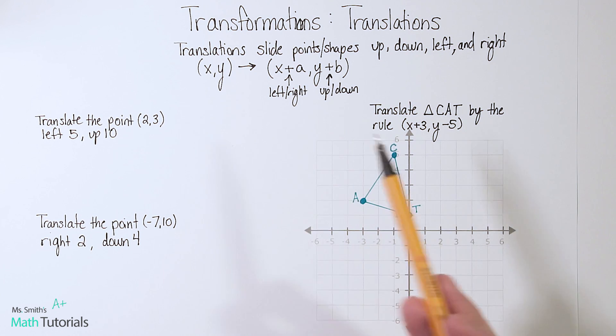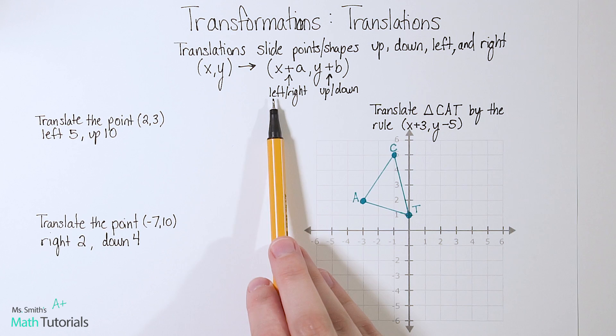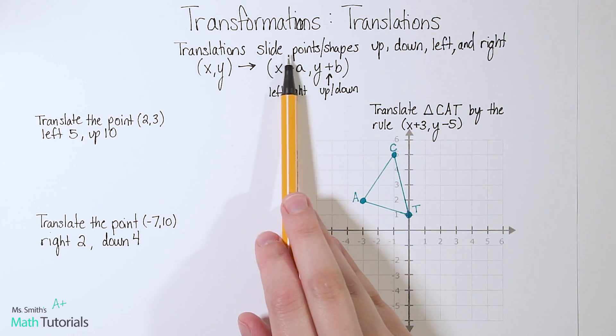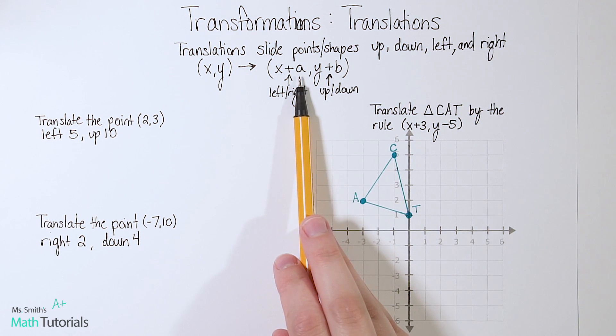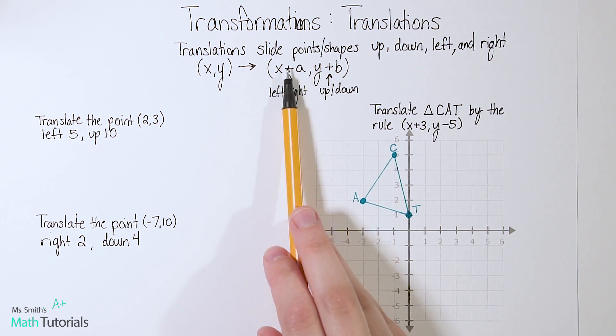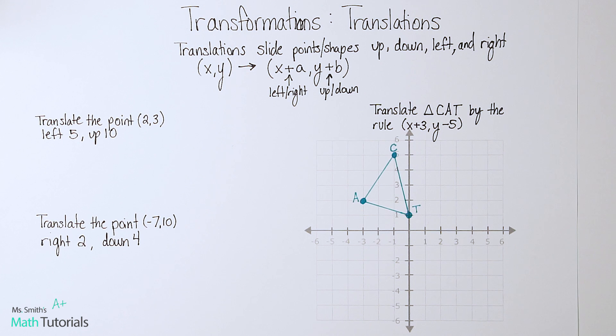And then a is going to be the determining factor, that could be moving left or right. So the x value controls moving left or right. Now the a will change. It's just kind of a placeholder right now for whatever the number may be that we're putting in.